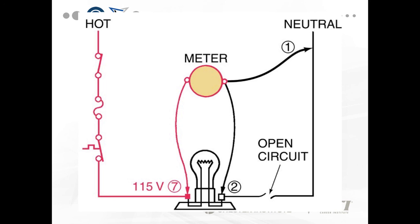Things to remember for electrical troubleshooting: use the hopscotch method — most times you'll be doing this with the circuit energized. Voltage across an open switch is source voltage. Voltage across a closed switch is zero. Resistance across an open switch is infinite. Resistance across a closed switch is zero.